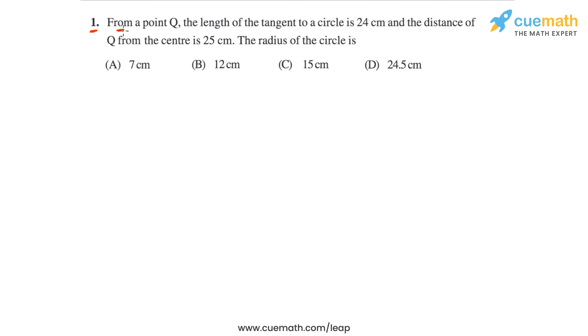Question one says from a point Q, the length of the tangent to a circle is 24 centimeters and the distance of Q from the center is 25 centimeters. So let's first draw a figure corresponding to the statement and then we'll understand what the question is asking us to do.